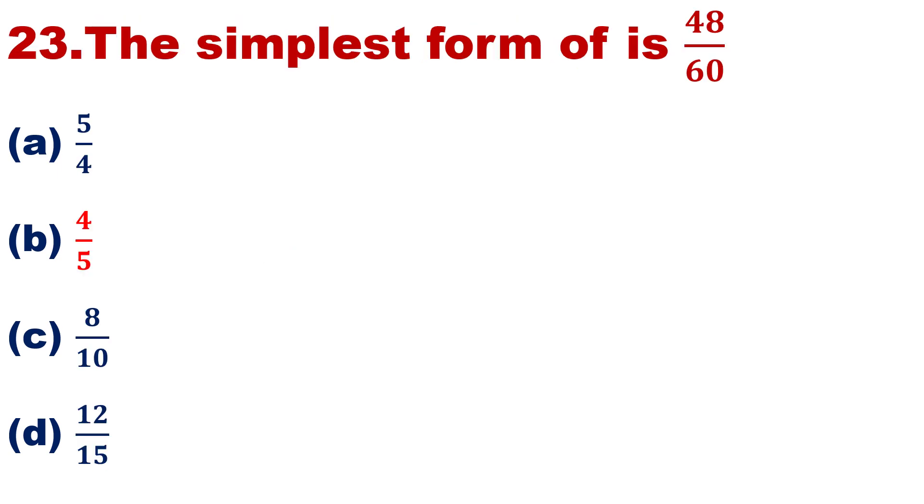Question number 23: The simplest form of 48 upon 60 is. Calculate and choose your answer.